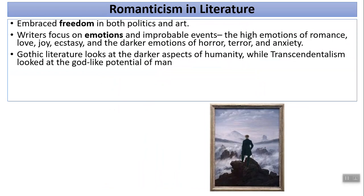Gothic literature, including the stories we're going to look at, looks at the darker aspects of humanity. Transcendentalism also was taking place during part of this time, and it looked at more the godlike potential of man. If we think about romanticism as a spectrum — like a number line — with five being moderate and rational, Gothic literature would be like a one on the scale: dark depression, depravity. Edgar Allan Poe's stories fit into this. Transcendentalism is more like a ten on the scale, looking at how people can be generous, caring, good, and loving. Authors many times take one of these two poles, because the middle is not always so interesting.